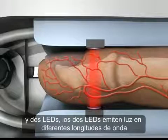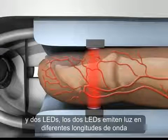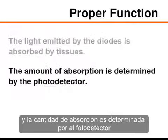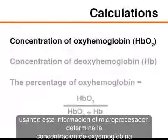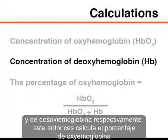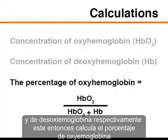The two light-emitting diodes emit light of different wavelengths. The light emitted by the diodes is absorbed by tissues, and the amount of absorption is determined by the photodetector. Using this information, the microprocessor determines the concentration of oxyhemoglobin and deoxyhemoglobin, respectively.